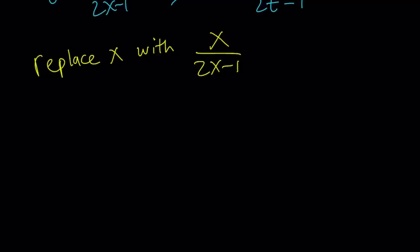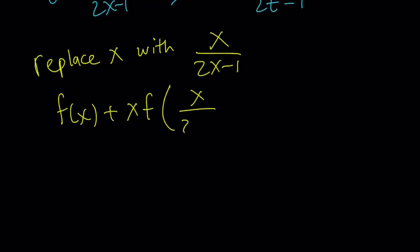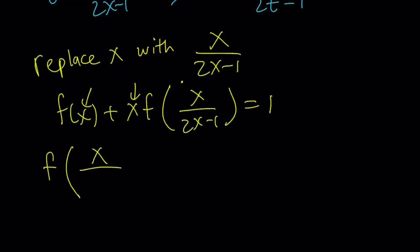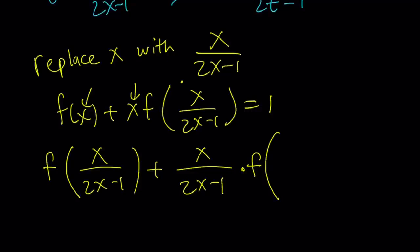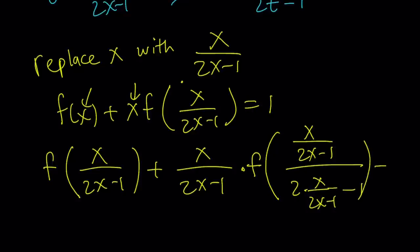My original equation was f of x plus x times f of x over 2x minus 1 equals 1. Now I'm going to replace x with x over 2x minus 1 everywhere — here, here, and here. If you do, you get f of x over 2x minus 1, plus x over 2x minus 1 multiplied by f of 2 times x over 2x minus 1 minus 1, and the whole thing should equal 1.